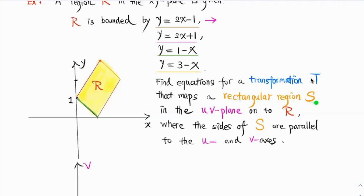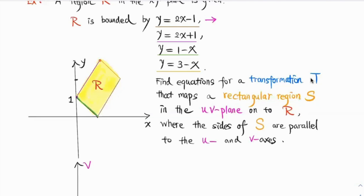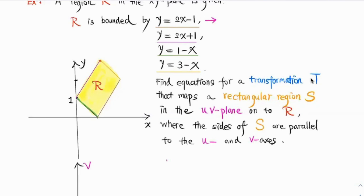The reason is that it's a rectangle, right? So we want U and V to be bounded by some constant. That way we're going to have a rectangle.